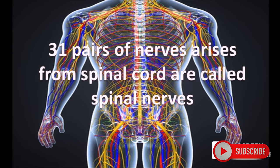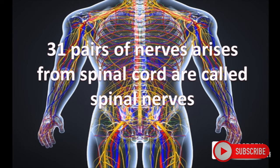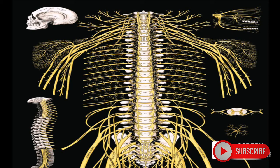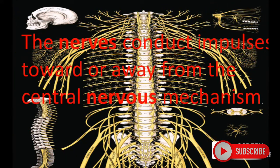31 pairs of nerves arising from the spinal cord are called spinal nerves. Spinal nerves conduct impulses towards or away from the central nervous system, acting as an intermediary between muscles and the brain.